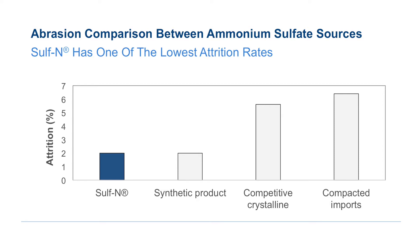Another way to determine hardness is to measure attrition. Attrition measures the fertilizer particle's resistance to abrasion. A lower attrition value means higher resistance to the creation of fines.